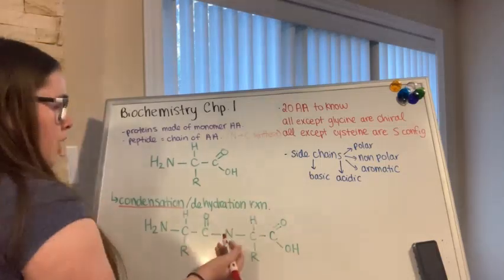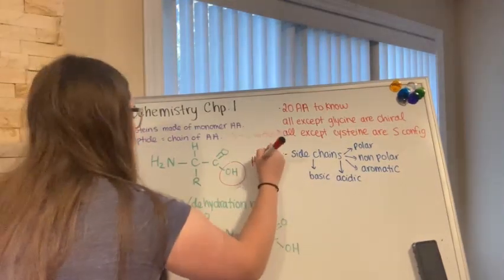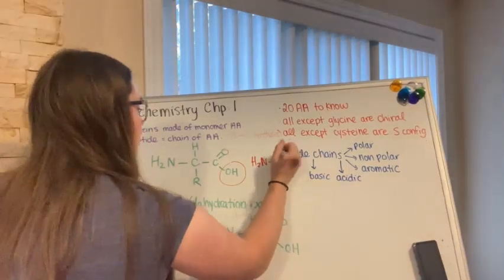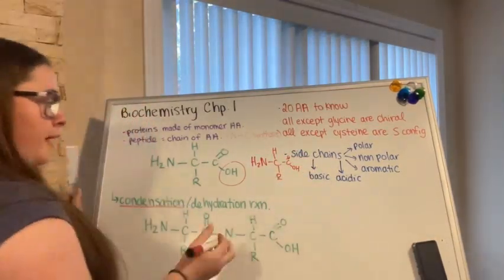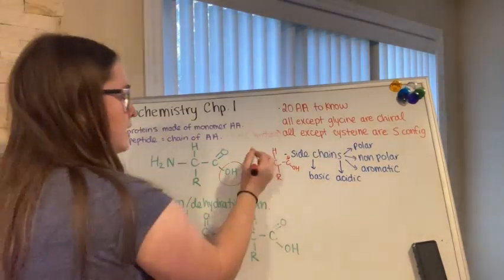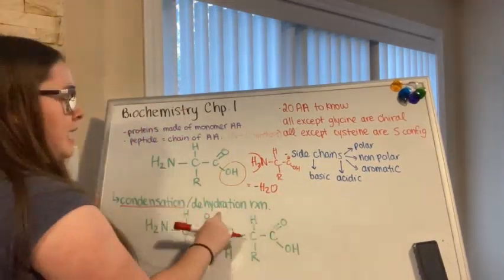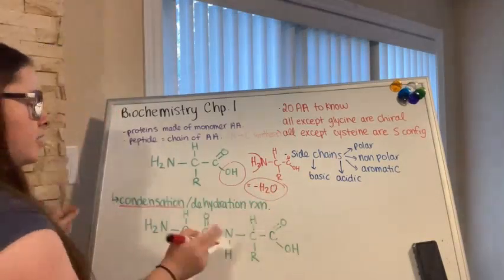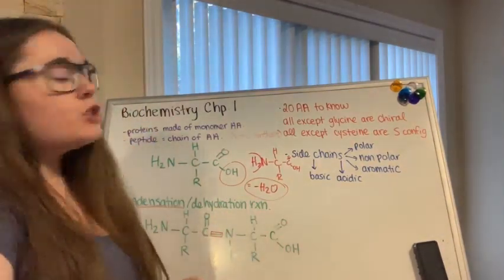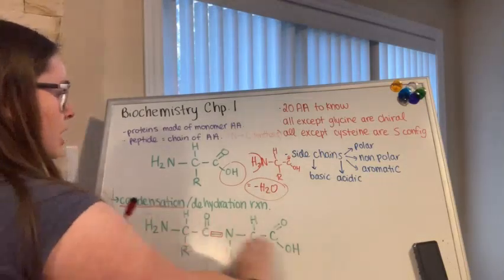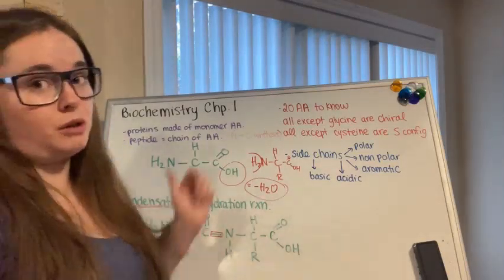You take the OH from this amino acid and one of the H's from another amino acid. This produces water, which is why it's called a dehydration reaction — you're taking this water molecule out. That is what forms the peptide bond connecting these amino acids. The peptide chain is synthesized from N to C terminus, because you're adding to the carbon end.